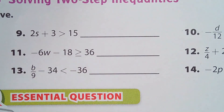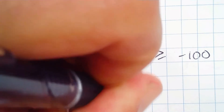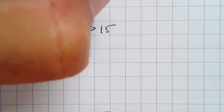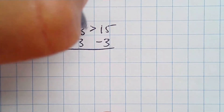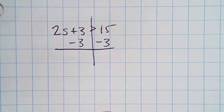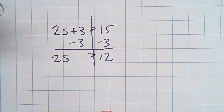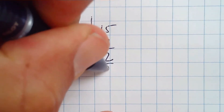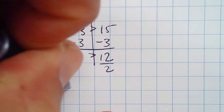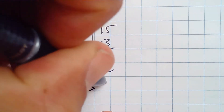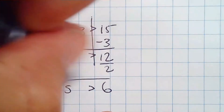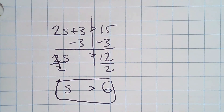Number 9: 2S plus 3 is greater than 15. I subtract 3 from both sides of the inequality, giving 2S is greater than 12. Divide by 2, and S is greater than 6.